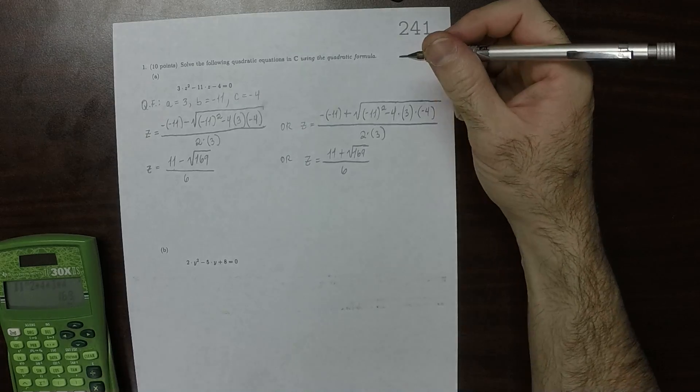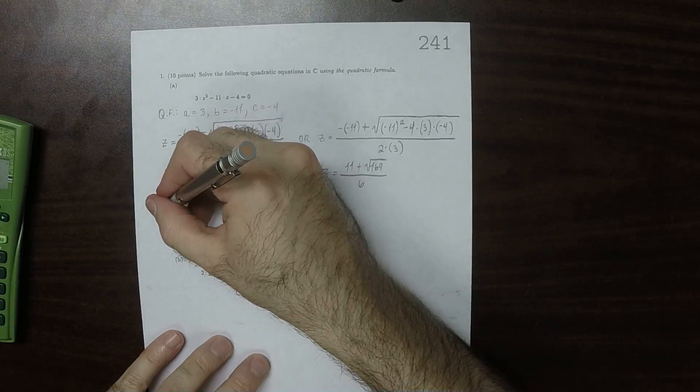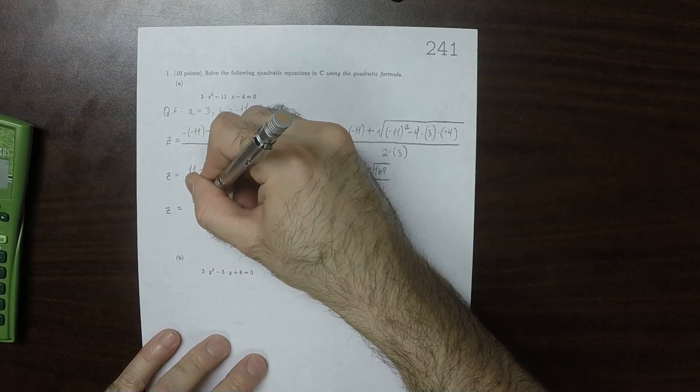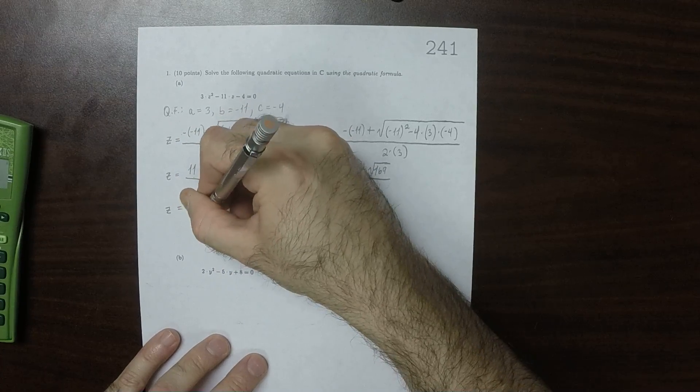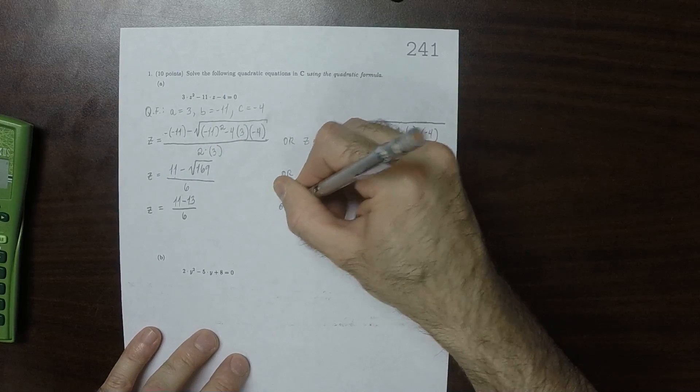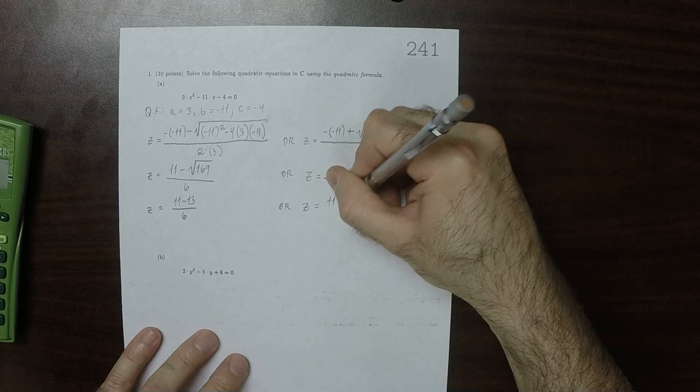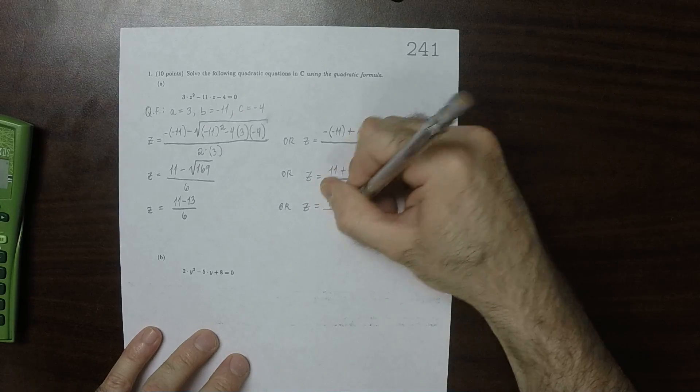Now, the square root of 169 is 13, so this would be z is 11 minus 13 over 6, or z is 11 plus 13 over 6.